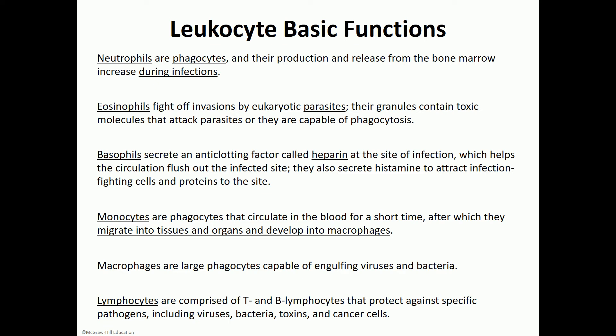Neutrophils increase a lot especially in bacterial infections. The nuclei of neutrophils are polymorphic, meaning they have different shapes — they're made out of more than one lobule, so they have multi-lobular nuclei. Eosinophils fight off invasions especially in the presence of parasites, like worms for example. If a patient has eosinophilia — an increase in the number of eosinophils — you want to start looking for parasites somewhere in the body.